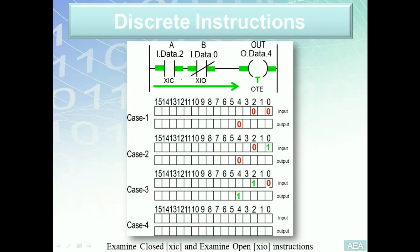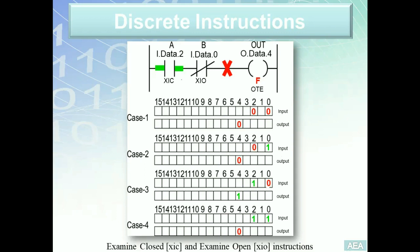The last case: when both inputs are closed, both will be reading ones. The XIC checks terminal number two — is it closed? Yes, so the XIC will be true. Moving to the XIO, examining terminal zero if it's open — in this case it's one, not zero. That's why this instruction would be false, resulting in a broken rung. One false instruction is enough — this yields a false OTE, which writes a logic zero into memory location number four.